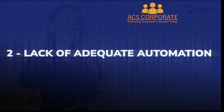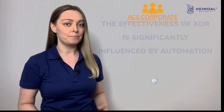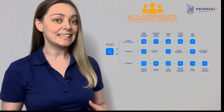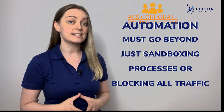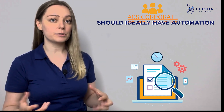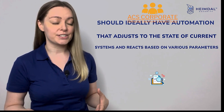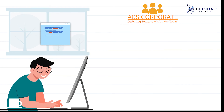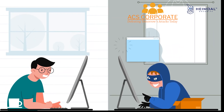Secondly, lack of adequate automation. The effectiveness of XDR is significantly influenced by automation. A security team's workload is reduced as a result of the ability to automate tracking, alerts, and responses, allowing them to focus on more challenging tasks. However, in order to be effective, automation must go beyond just sandboxing processes or blocking all traffic. The XDR platform you pick should ideally have automation that adjusts to the state of current systems and reacts based on various parameters — for instance, recognizing when a device connects to your network and being able to either match it to a previous user profile or assign a temporary status to it.